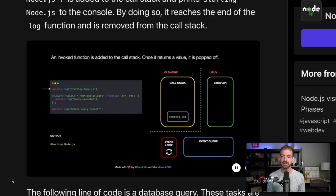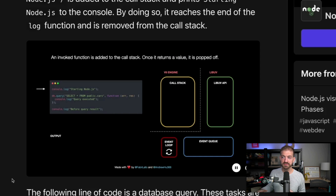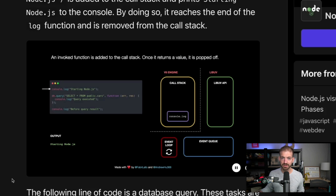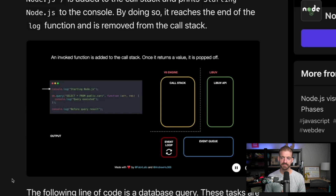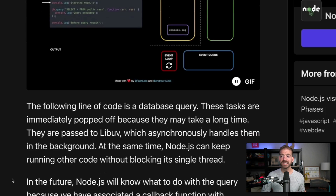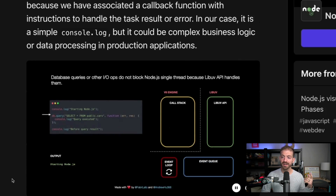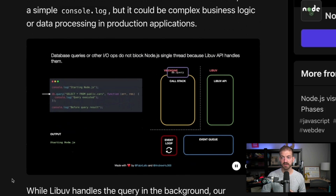With the console log, we call the function, add it to the call stack, it executes because it's synchronous code, and now it disappears from the call stack. It changes, though, when we run the database query.